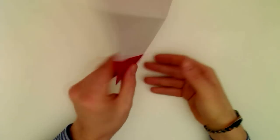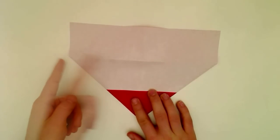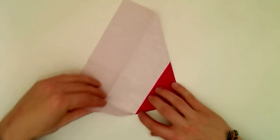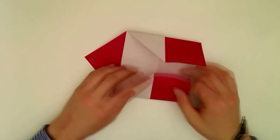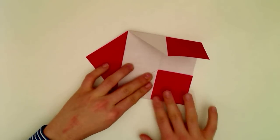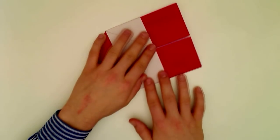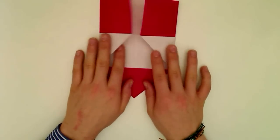Now turn the sheet over again and fold the outer edges to the center line here. Well done. Just like this, and it looks like a cupboard a little.